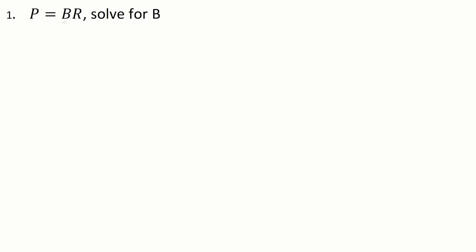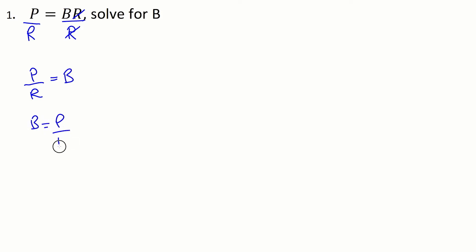So if we're solving for B, we need to get rid of the R on this side, and the current operation is multiplication. So what we're going to do is just divide by R on both sides to maintain the balance, and we'll get P over R, because these would cancel out to give one, and that's equal to B. You could write it as B is equal to P over R. So that was a pretty simple case, but this one is now isolated for B.